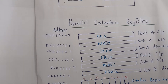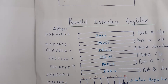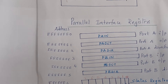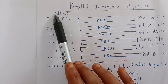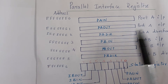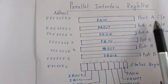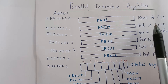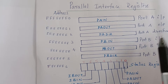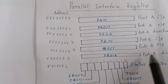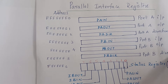Let us discuss parallel interface registers. The block diagram shows the memory addresses for Port A input, Port A output, Port A direction, Port B input, Port B output, and Port B direction.